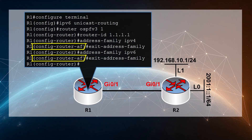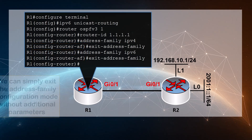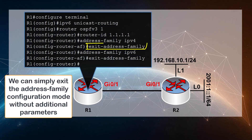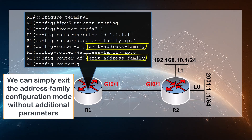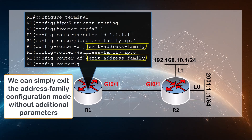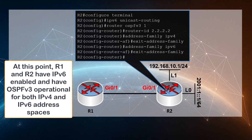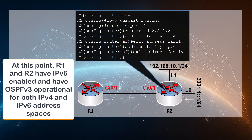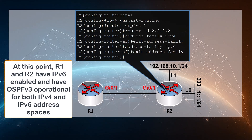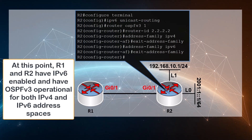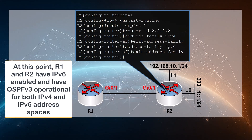With the address family commands, you enable OSPF version 3 for both IPv4 and IPv6. You enter the router address family configuration mode, where you have the option of issuing various additional commands for fine-tuning OSPF for that particular address family. For now, we won't use any of these — it's simply enough to have enabled OSPF version 3 for both IPv4 and IPv6. We then perform exactly the same commands on R2.